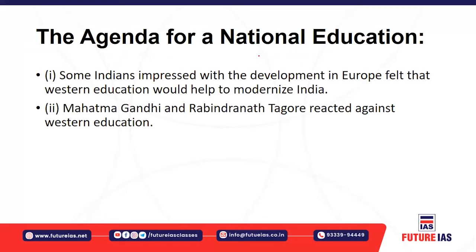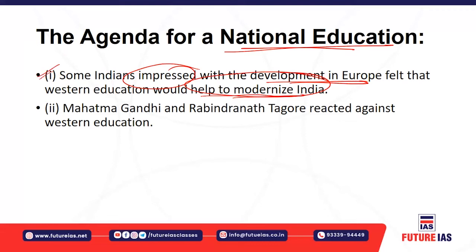With these changes, certain Indians were impressed and felt that western education would help modernize India. The development happening in Europe had impressed Indians and they believed it would benefit India's modernization. However, both Mahatma Gandhi and Rabindranath Tagore reacted against western education in India.